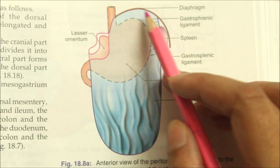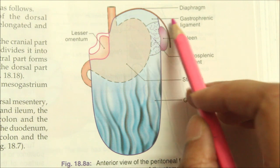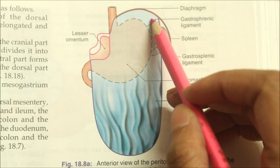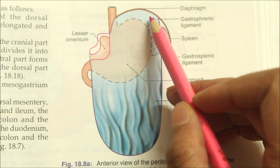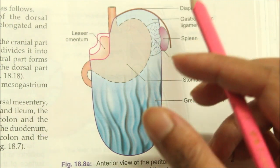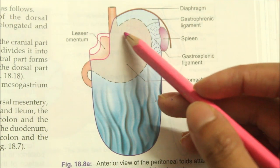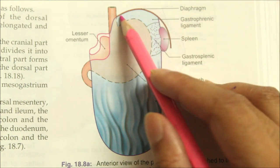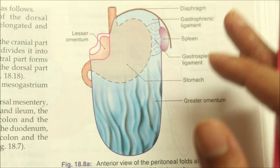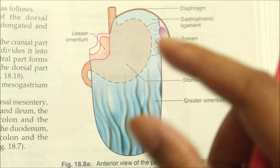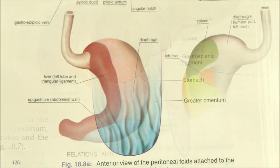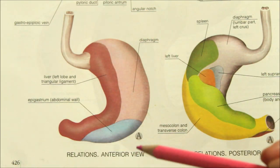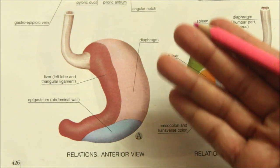Cranial to the gastrophrenic ligament there is a small part of the posterior surface of the stomach which is in direct contact with the diaphragm. This area is called the bare area of the stomach.